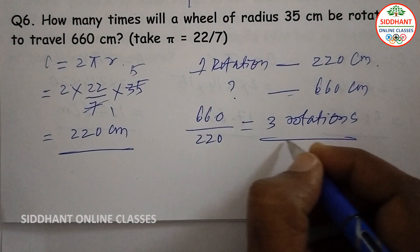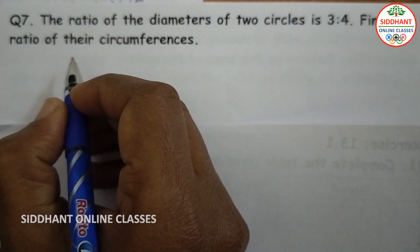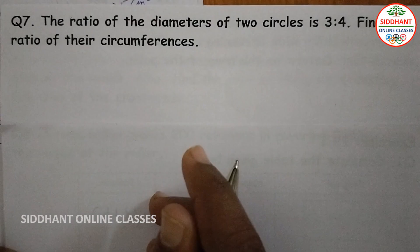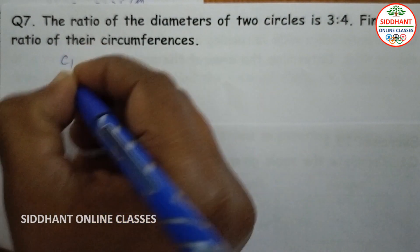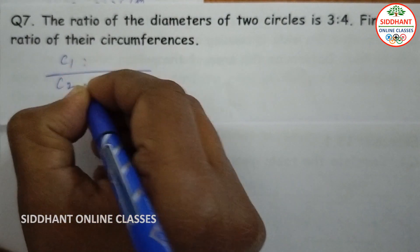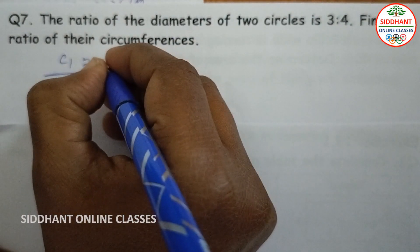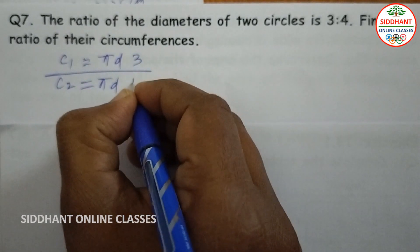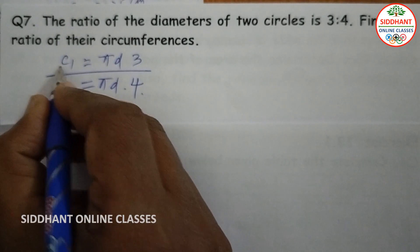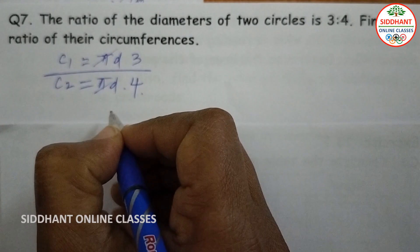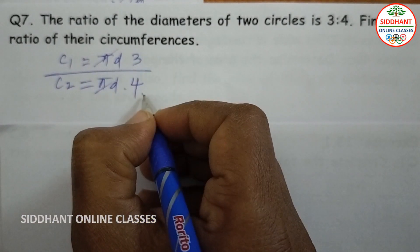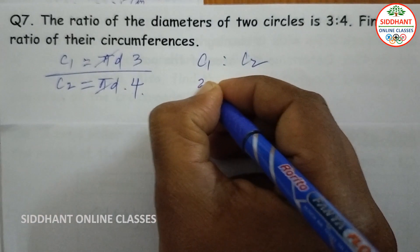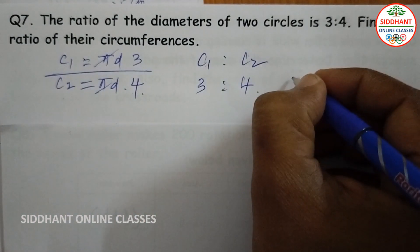So the wheel will rotate 3 times. Question number seven: the ratio of diameters of two circles is 3 is to 4, find the ratio of their circumferences. For two circles C1 and C2, circumference equals pi d. The diameters are in the ratio 3 to 4, and since pi cancels, the circumferences C1 and C2 are also in the ratio 3 is to 4.